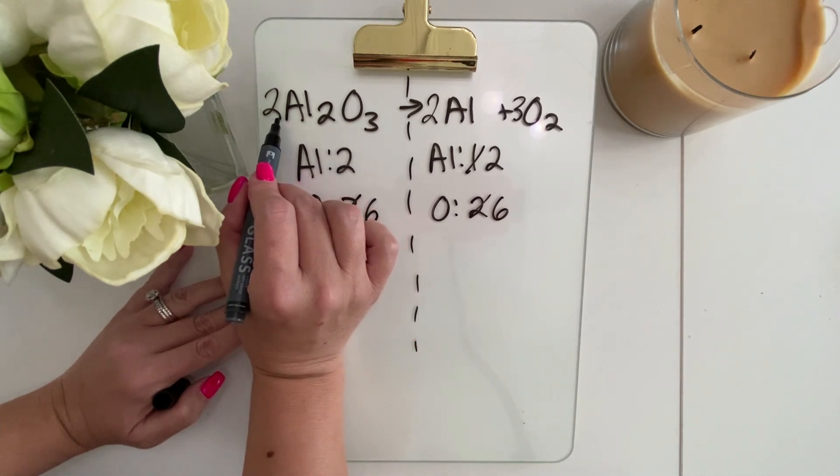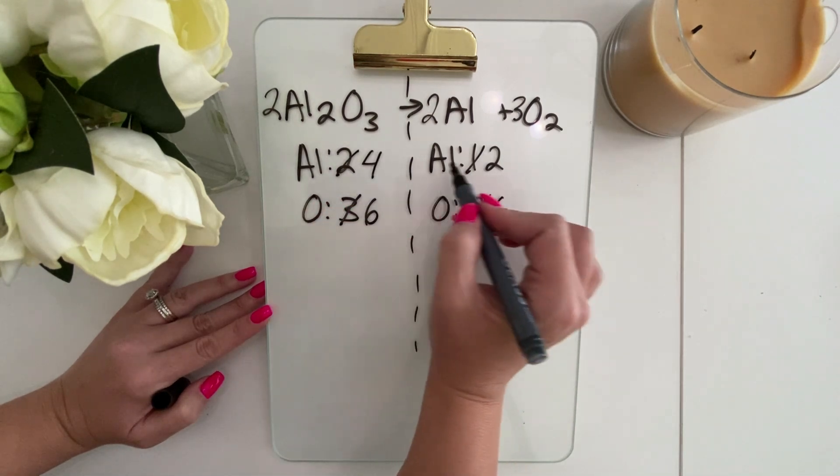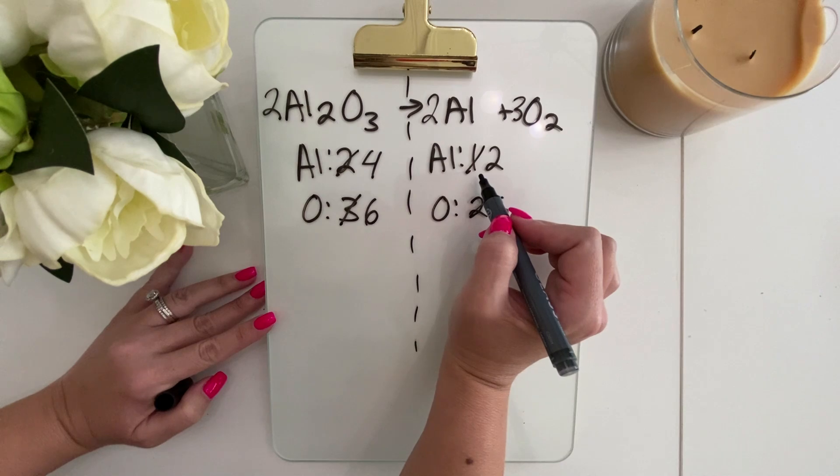However, that has altered our aluminum now, so now 2 times 2 is 4. So I need to go back and correct our aluminum on our product side.